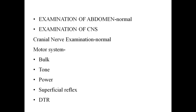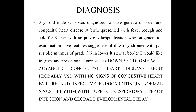CNS examination should be detailed. Mention deep tendon reflexes — in Down syndrome with hypotonia, reflexes may show delayed relaxation or be sluggish. Tone: if the child has hypotonia, it should be mentioned. If normal, write accordingly. Mainly tone and reflexes should be properly mentioned in the Down syndrome child.